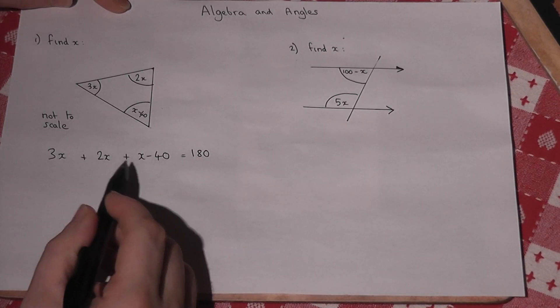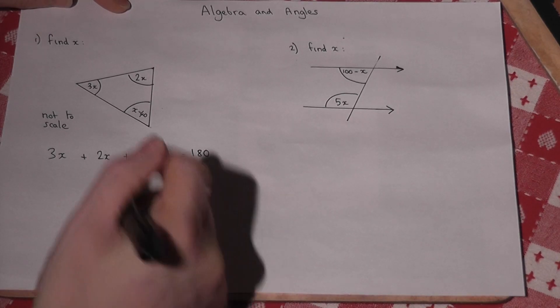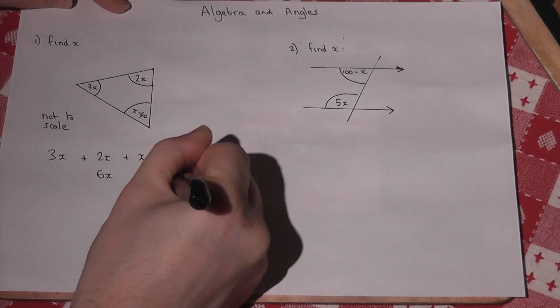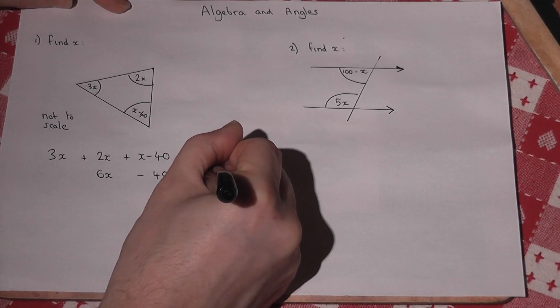I can then simplify. 3x, 2x and 1x is 6x. So 6x take 40 must equal 180.